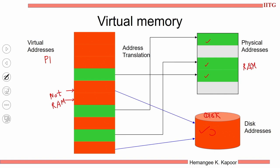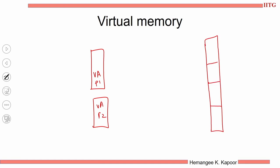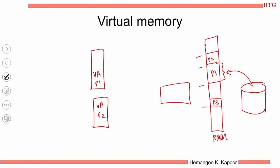Extending the same concept, we have the virtual address space of process P1, similarly for process P2, and several such processes running — all of them mapped somewhere into the RAM. P1 gets a certain share of RAM, P2 a slightly smaller share, P3 even smaller. The remaining share of each process is stored and accessed from the disk. The address translation unit, which translates virtual to physical addresses, also checks boundaries to prevent a process from accessing another process's data.